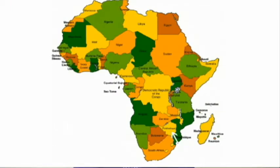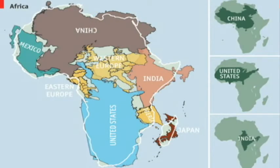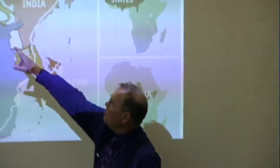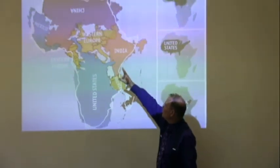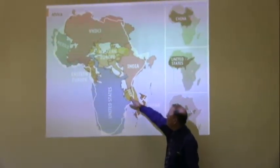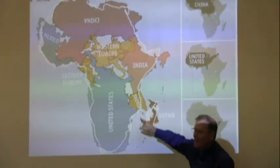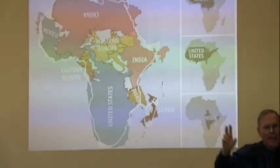Africa University is located right down here in the country of Zimbabwe. These are the continents of the world superimposed on top of the African continent. You can see the United States, Eastern Europe, Mexico, China, Western Europe, India, Iberia — that means Spain and Portugal — and the island of Japan would all fit easily on the African continent.